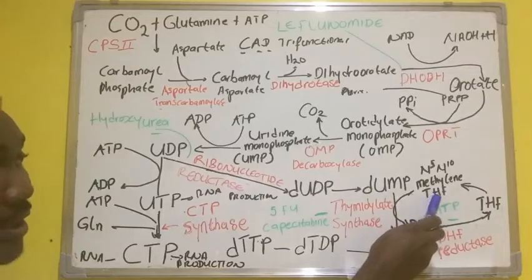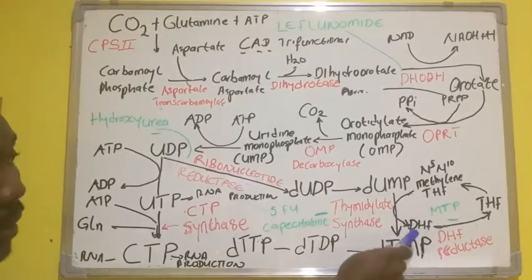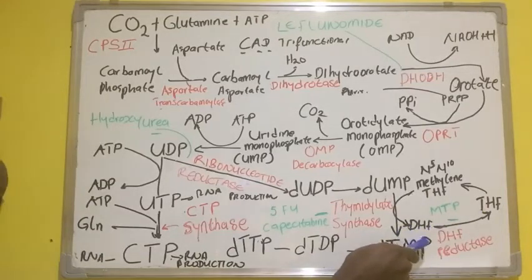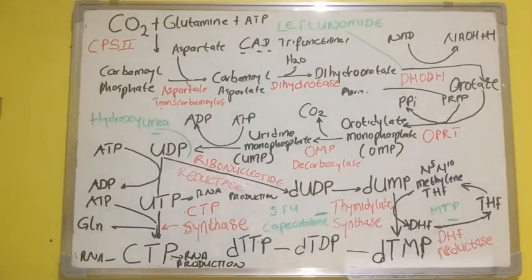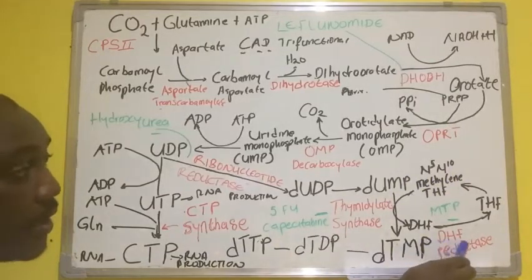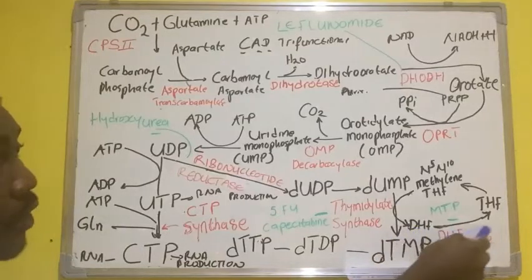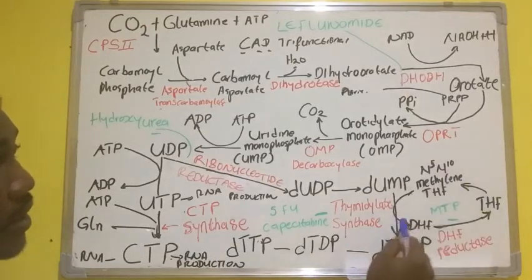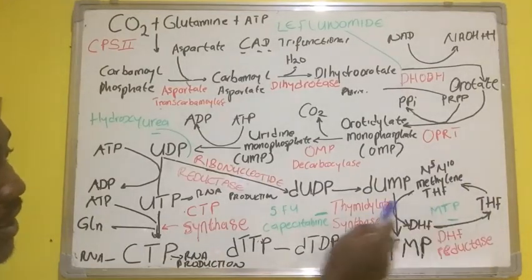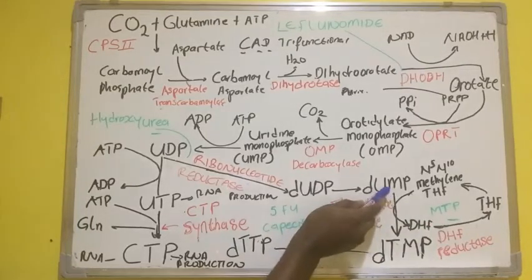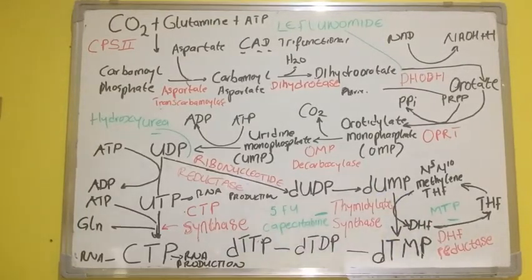Tetrahydrofolate is formed from dihydrofolate. The dihydrofolate is actually converted to tetrahydrofolate by the enzyme dihydrofolate reductase, which assists the thymidylate synthase to convert dUMP to dTMP.